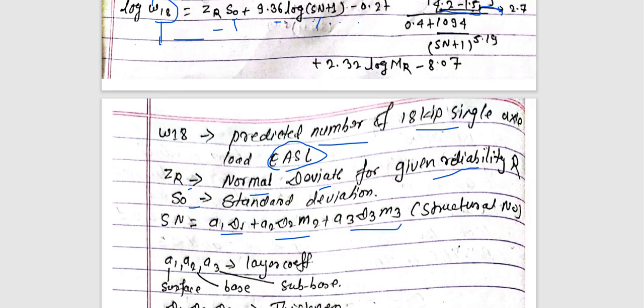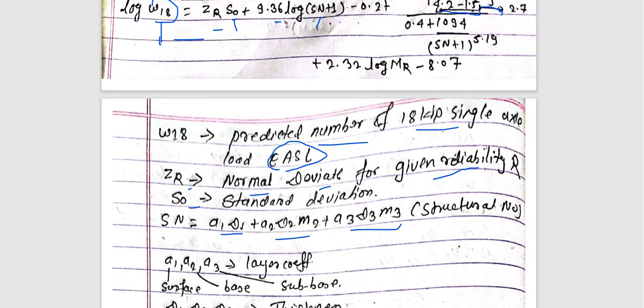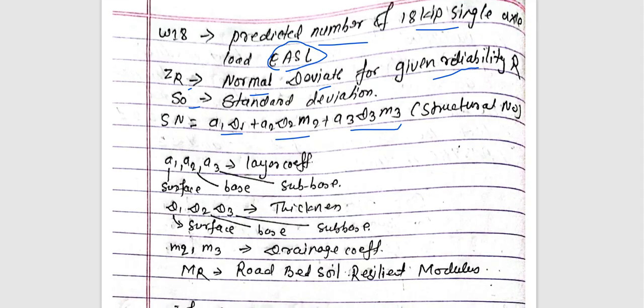In the SN formula, a1, a2, a3 are the layer coefficients — a1 for surface, a2 for base, a3 for subbase. d1, d2, d3 are the thicknesses: d1 for surface, d2 for base, d3 for subbase.